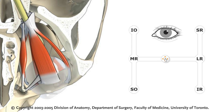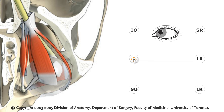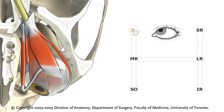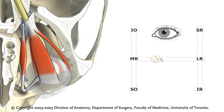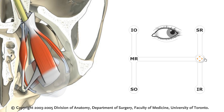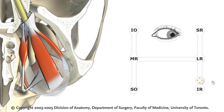We have six cardinal positions of gaze where you test eye movements. First, we move medially, using the medial rectus muscle. When our eyes are in this position closest to the nose, we look up using the inferior oblique, and we look down using the superior oblique. Similarly, we can look laterally using the lateral rectus when our eyes are staring forward, and we add the superior rectus to look up and the inferior rectus to look down.